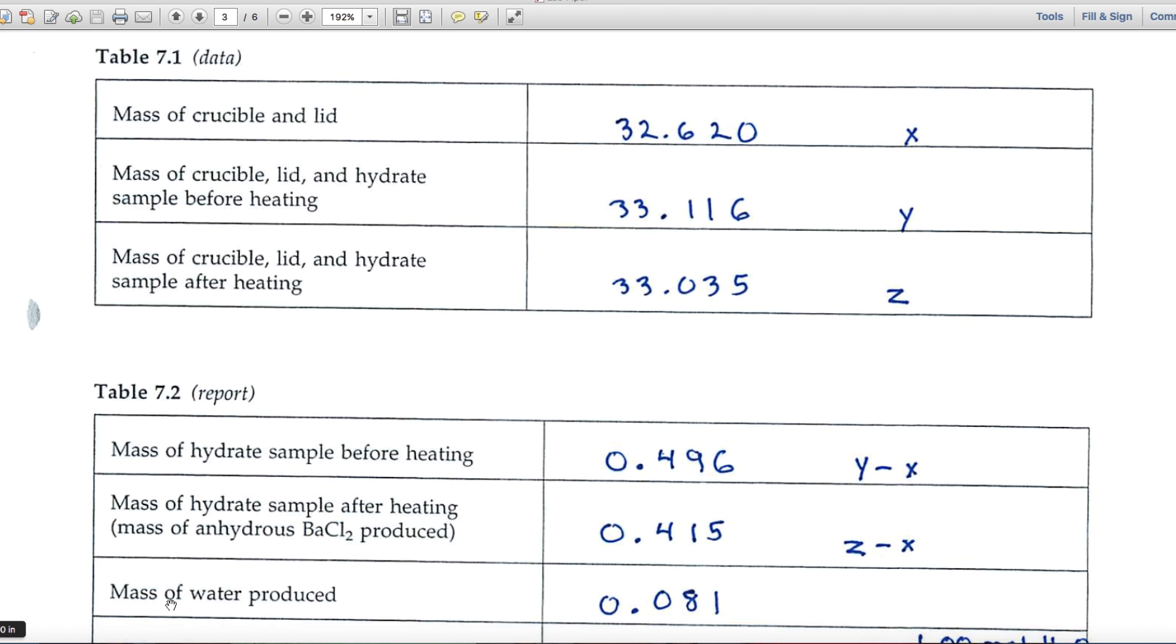The mass of water produced—we're driving off water. Here's the weight of the hydrate sample, the weight after we've driven off the water. So we'll subtract to get the mass or grams of water that were produced. Our numbers expressed to the thousandth, but notice now we've got just two significant figures. These leading zeros are not significant.